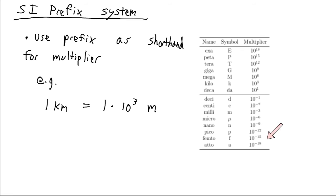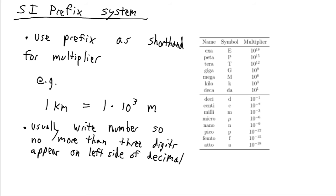You might notice something about these factors over here. The ones that we've defined, they tend to go by powers of three. So we go from the third power to the sixth power, to the ninth power, to the twelfth power, etc. Now for that reason, we usually tend to write our numbers so that they have a group of three digits at most on the left side of the decimal. So say you have the number 215,800 meters. The way you might instead write that is 215.8 kilometers.